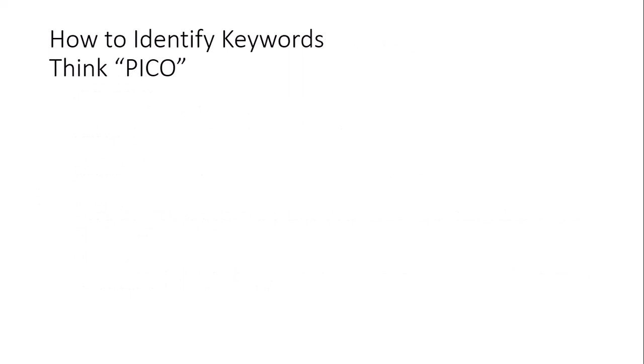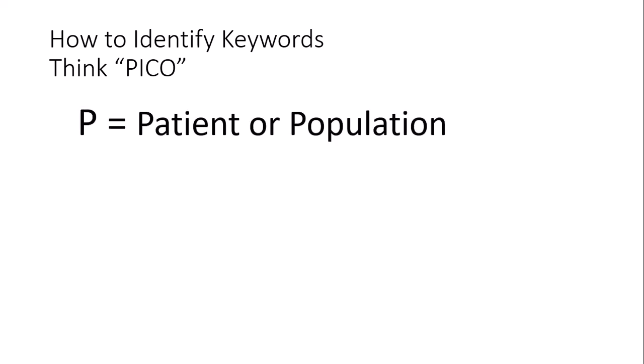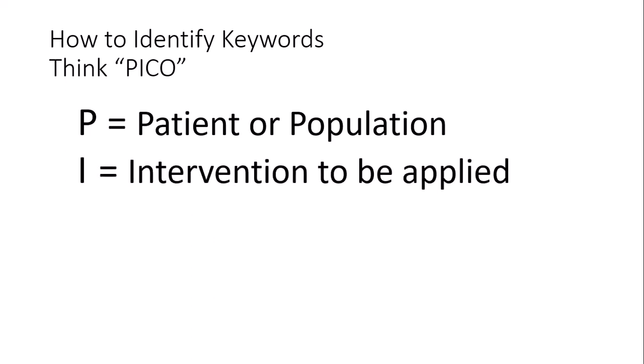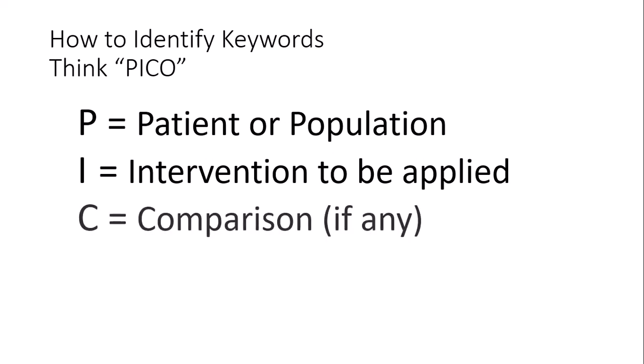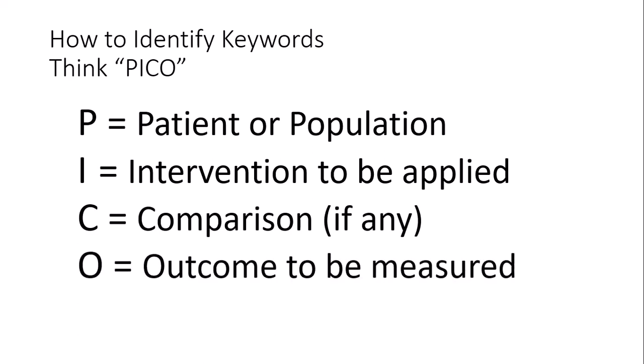When you've prepared to search databases for journal articles, a mnemonic that will help you is PICO — P-I-C-O. The P stands for patient or population, the I stands for an intervention to be applied, the C is a comparison if there is one, and the O is the outcome to be measured. You might want to structure your thinking about a search this way before you begin, if you're looking for journal articles about treatments and interventions.